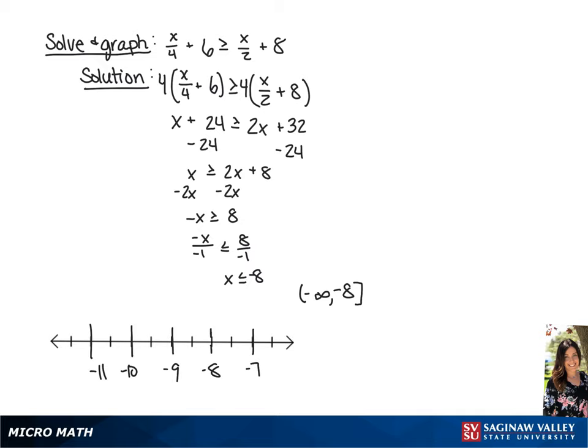Now we're going to graph this, which means we're going to draw a closed circle around negative 8, and our arrow is going to be going to the left or to negative infinity.